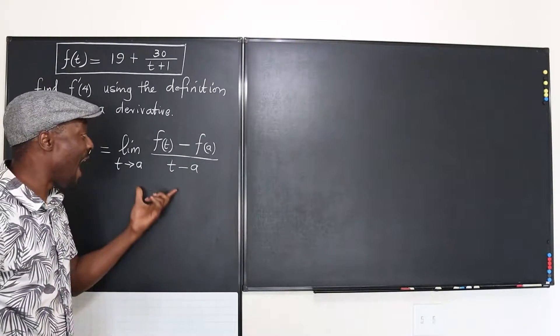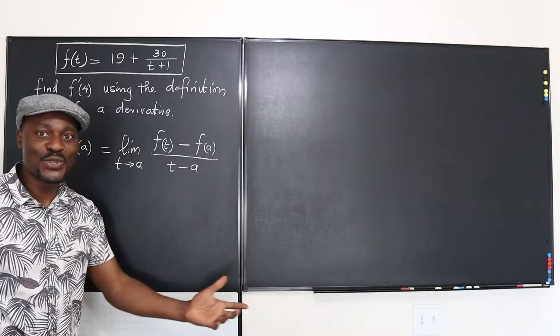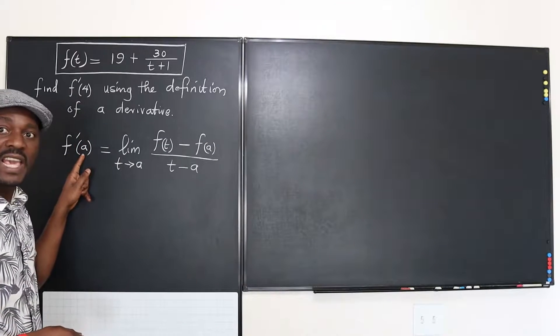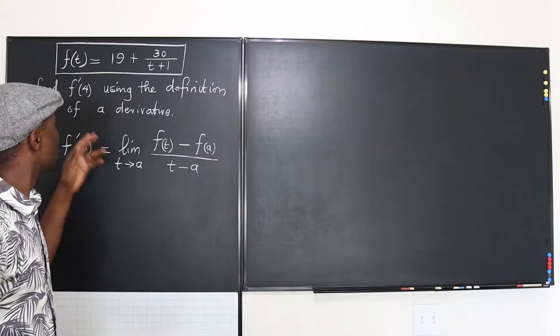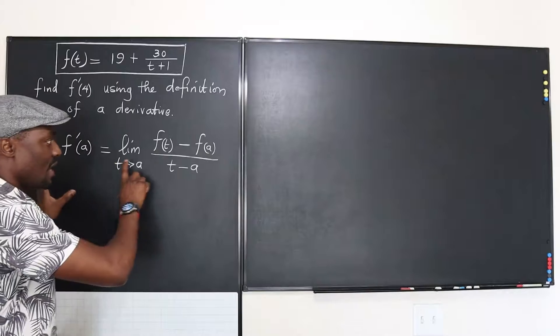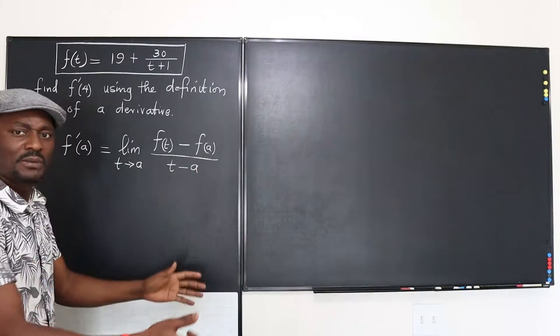All you have to do after knowing this is just do your substitution. Now we know that a is 4 in this case because we're supposed to take the derivative at the point t equals 4. So let's put the numbers in here and just do the algebra, that's all.